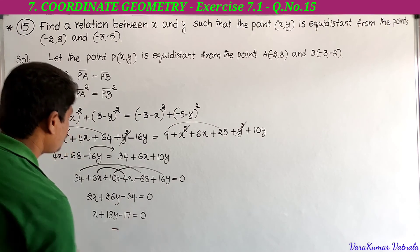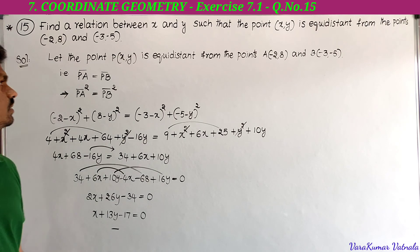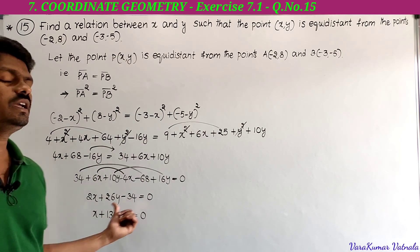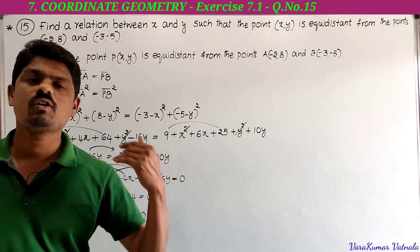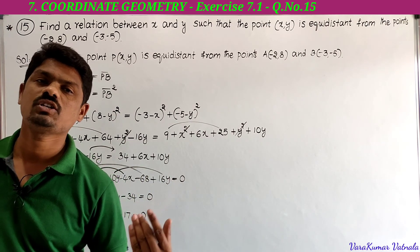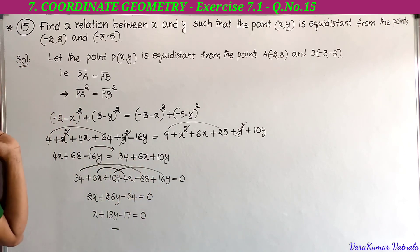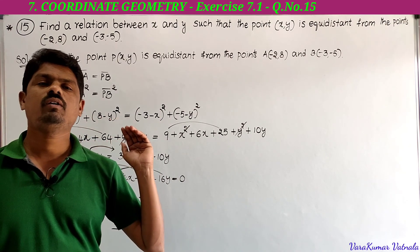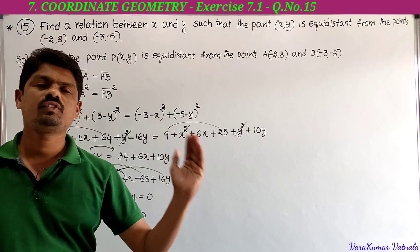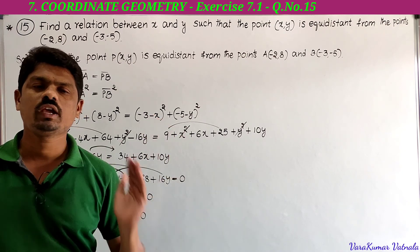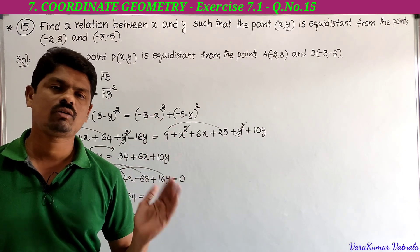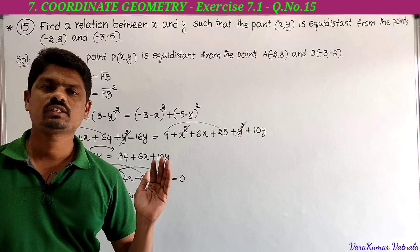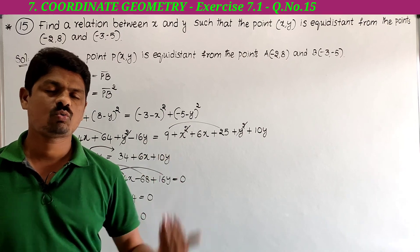So x + 13y - 17 = 0 is the required relation between x and y. This was problem 15 in exercise 7.1. There are a total of 15 problems and we have now completed all of them. That's all for today's class. Thanks for watching.